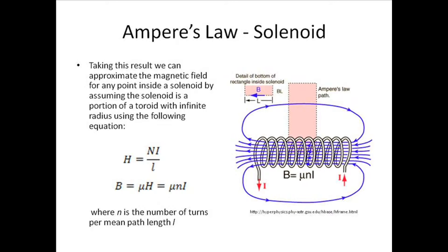Or as is seen in the diagram to the right, B is equal to mu H, which is mu little n I, where little n is the number of turns per mean path length L.